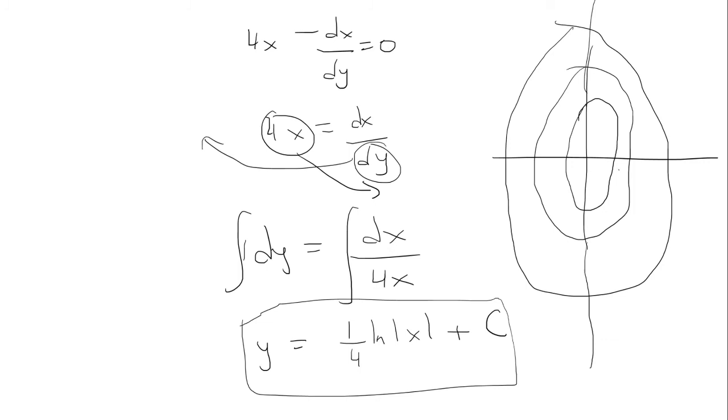Now we have our (1/4)ln|x| + C. For each value of c, it's going to intersect the ellipses. Every time the intersection has to form a 90-degree angle. The orthogonal trajectory means right angle.